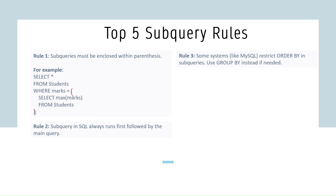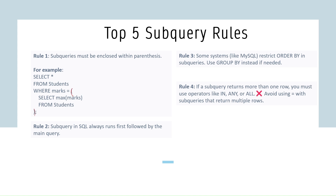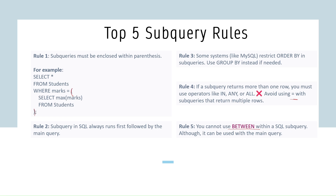Rule three: some systems like MySQL restrict ORDER BY in subqueries, so you can use GROUP BY instead if needed. Rule four: if a subquery returns more than one row, you must use operators like IN, ANY, or ALL — avoid using equals (=) with subqueries that return multiple rows. Rule five: you cannot use BETWEEN within a subquery, although it can be used in the main query.